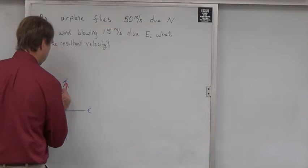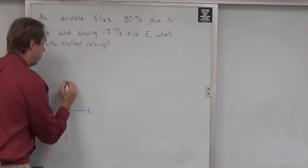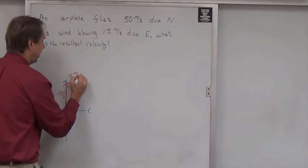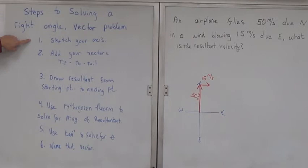I'm going to go up due north. I'm going to label that as 50 meters per second. Then I'm going to go 15 meters per second due east. Now, 15 is significantly shorter than 50 - it's less than half. So I'm going to make this vector shorter than the 50 to indicate the magnitude is less. Now I've sketched my two vectors. If you remember our steps, we've sketched the axis, we sketched our two vectors tip to tail. Now we're ready to draw in the resultant.